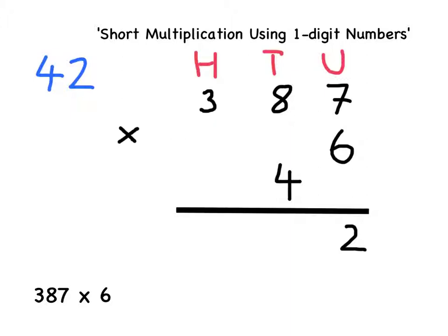Before I solve the next part of my short multiplication, just make sure you understand how I have written out the 42. The 42 has been partitioned into 40 and 2.